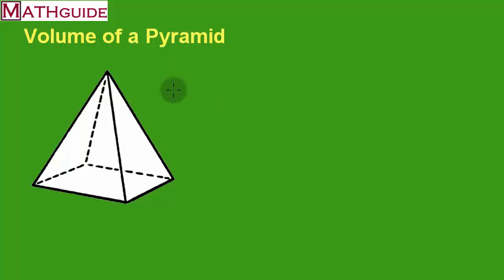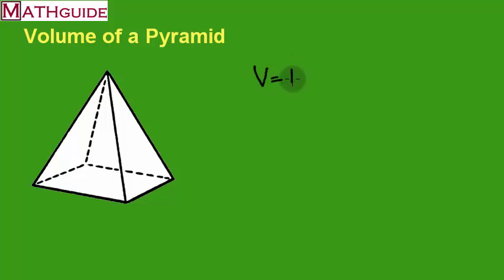So what's the formula? The formula for calculating the volume of a pyramid is the area of the base, B — that's the big B — times the height, divided by 3. So that's the formula we're going to be using.